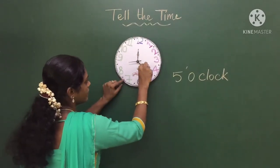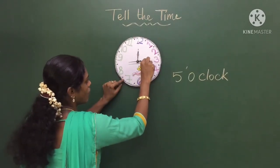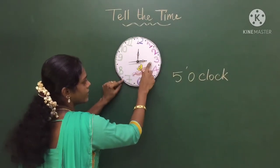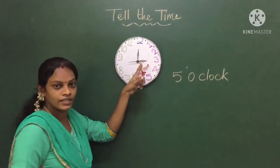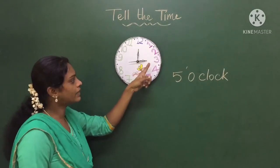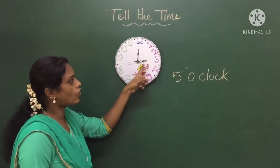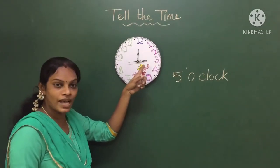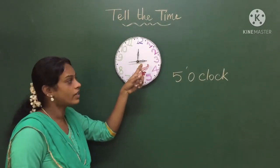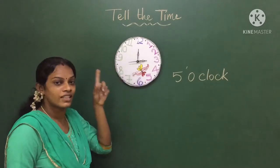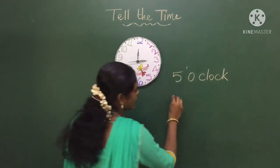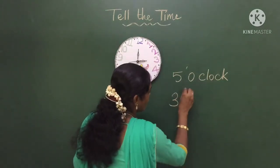Now what is the time here? The small hand is on the number three. So what is the time, children? It is three o'clock.